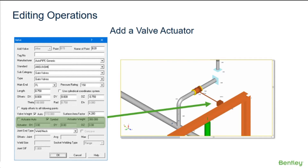Enter the offsets of the actuator from the valve center or midpoint along the global X, Y, and Z directions. If 0, 0, 0 are entered, then no handwheel or actuator symbol will be plotted.